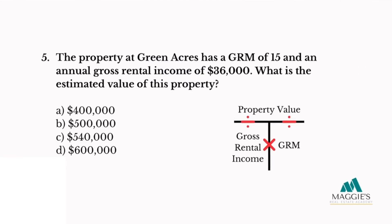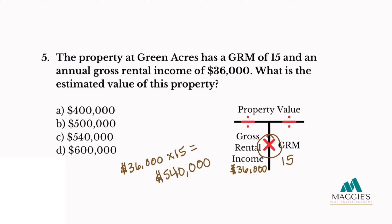Question five: The property at Green Acres has a GRM of 15 and an annual gross rental income of $36,000. What is the estimated value of this property? A. $400,000, B. $500,000, C. $540,000, or D. $600,000. With a GRM of 15 in the right column and gross rental income of $36,000 in the left column, I multiply: $36,000 times 15 equals $540,000. The answer is C.